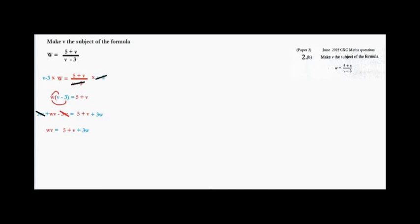What we can do now is subtract V from both sides, because we want to get rid of this V on the right side. So we subtract V from both sides — this V cancels this V — and now we have WV minus V equal 5 plus 3W.